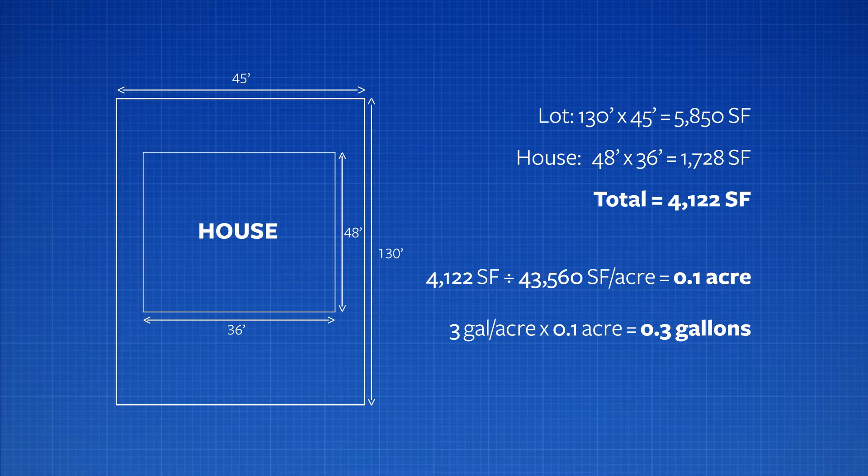So if you fill the sprayer to a specific point prior to treating this property, and then you measure how much remains after you're done treating it, you should have used 0.3 gallons. We recommend, of course, seven ounces per acre of Vectobac WDG. So we always recommend that people start out with a mix rate that will achieve seven ounces per acre when you use three gallons of total spray per acre.